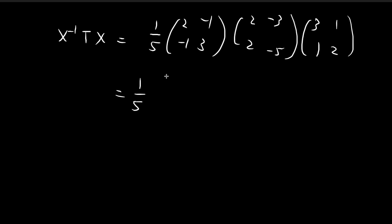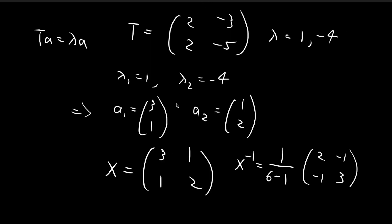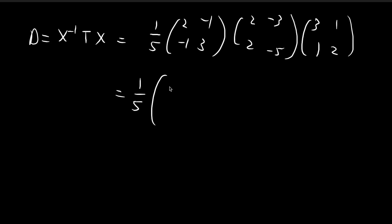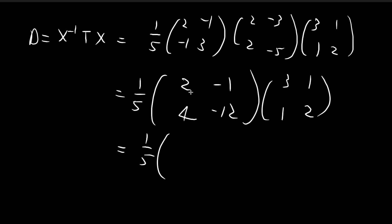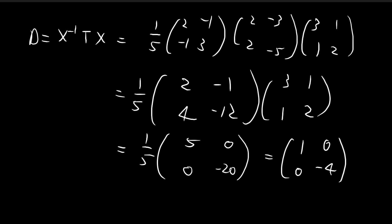If our proof is correct, the final expression should equal the diagonal matrix with entries 1 and -4 on the diagonal. Multiplying T·X first: we get entries 2, 4, -3+5=2 wait — working through the arithmetic gives the intermediate matrix, then multiplying by X⁻¹ = (1/5)[[2,-1],[-1,3]] yields entries 5, 0, 0, -20, and dividing by 5 gives [[1, 0], [0, -4]], which is exactly the diagonal matrix with eigenvalues 1 and -4.